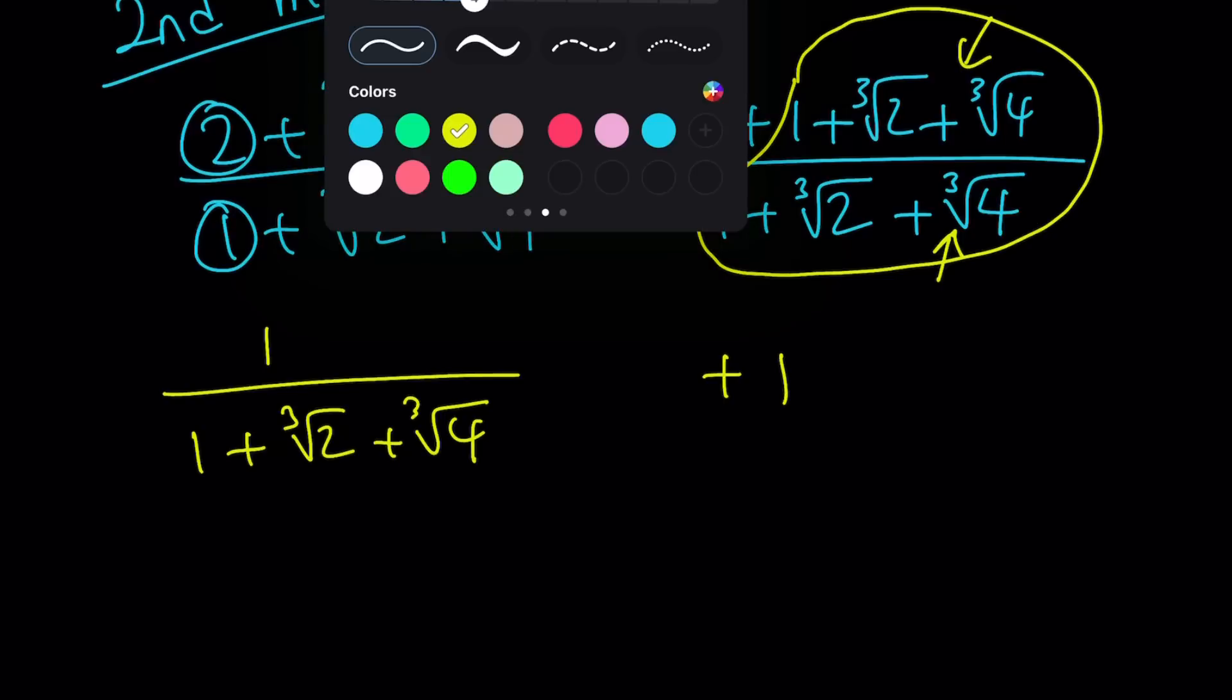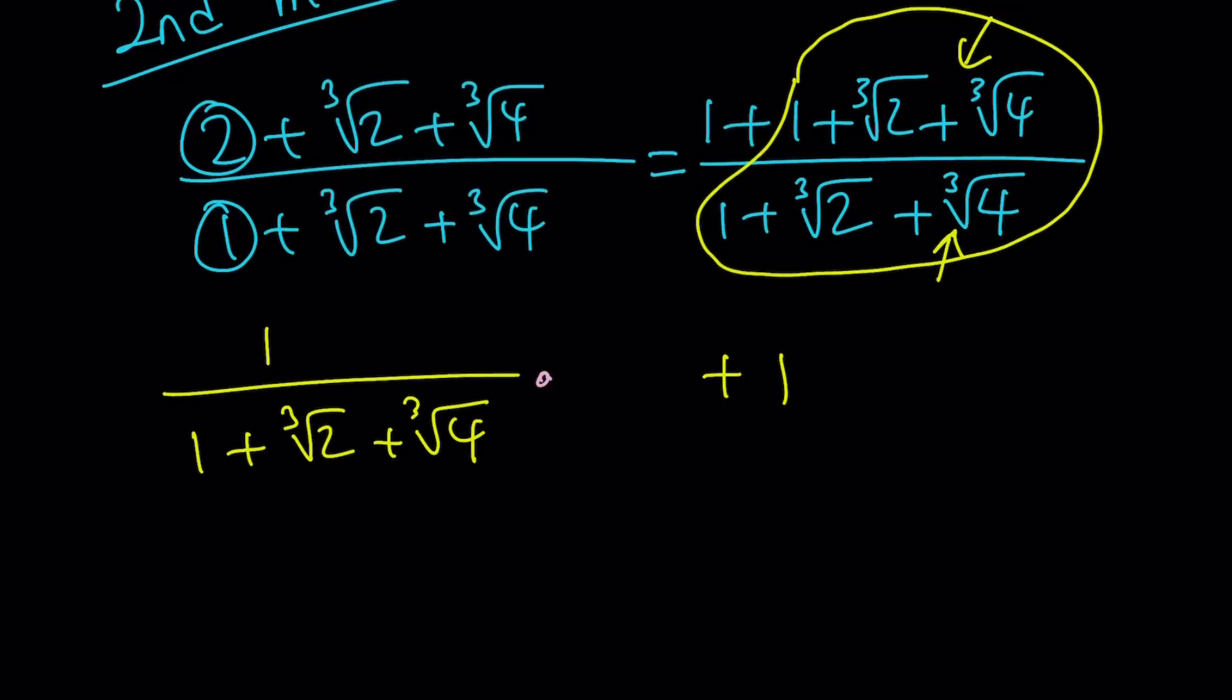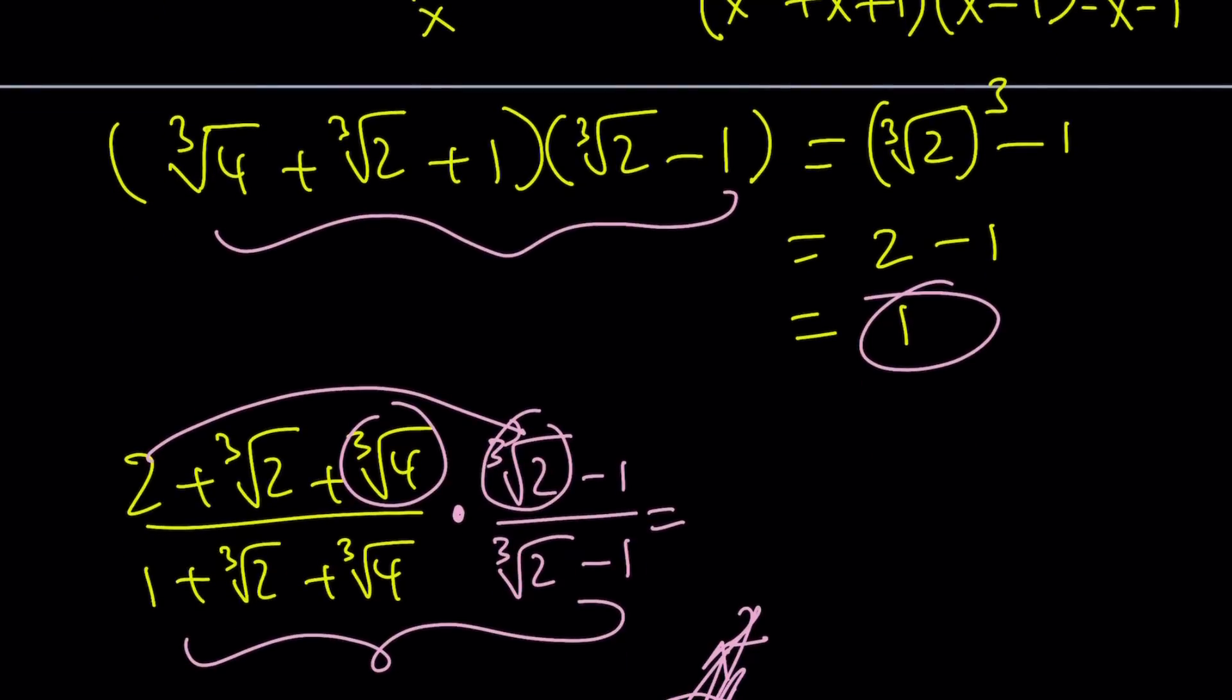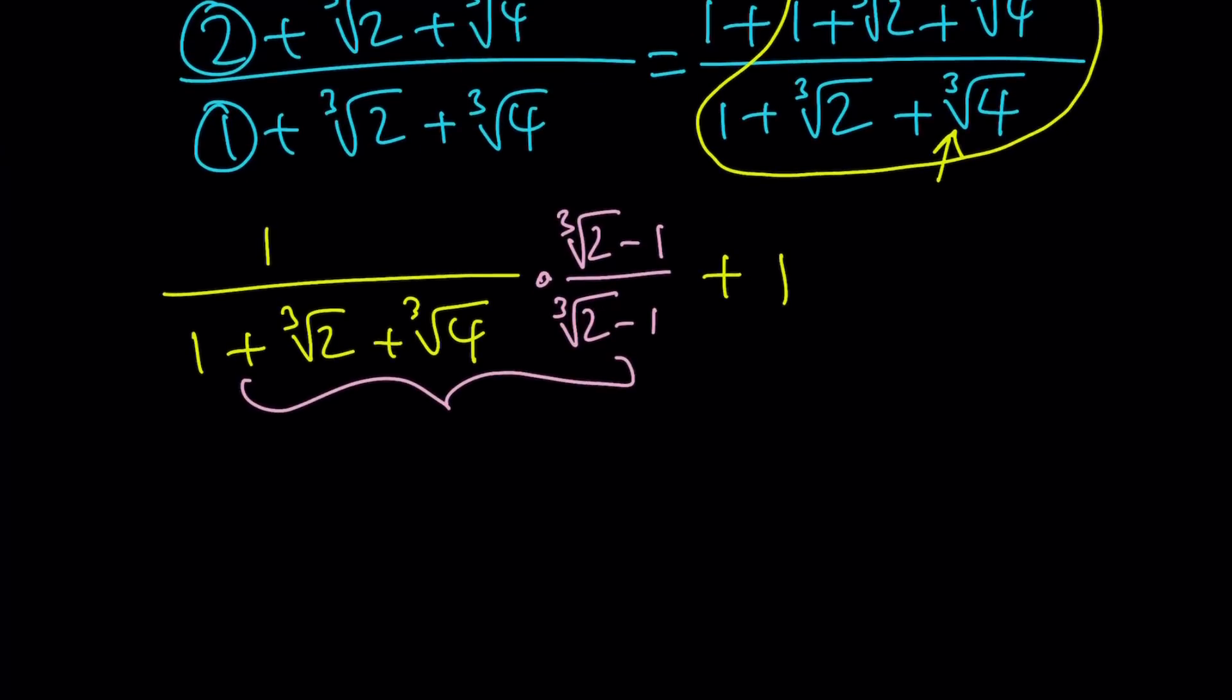1 over, the first one is going to be 1 over 1 plus cube root of 2 plus cube root of 4. And I'm going to leave some space because I'm going to multiply by the conjugate. Plus, this is the same thing, so it's just 1. Now let's multiply by the conjugate. Cube root of 2 minus 1 over cube root of 2 minus 1. If you don't know what I'm talking about, look at the first method. And this product, we've done that before, and that was equal to 1. So now let's use it. This is 1.